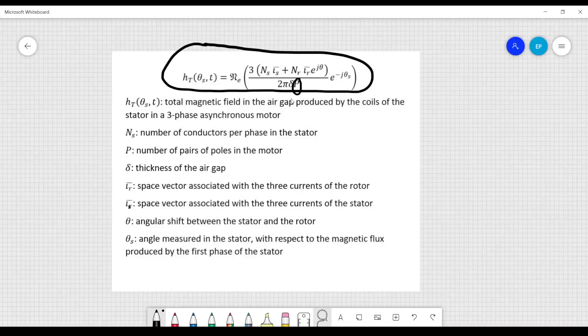Then there is also P, which is a parameter related to the number of pairs of poles that we have in the motor, and I will talk about the poles of the rotor.